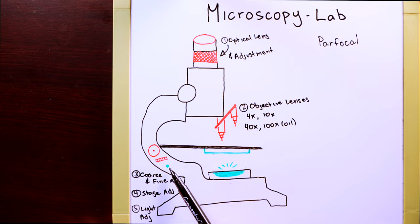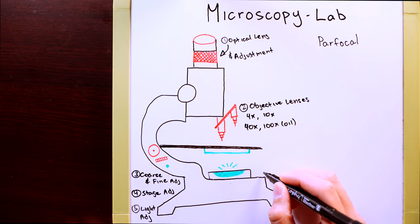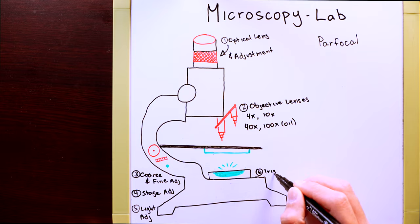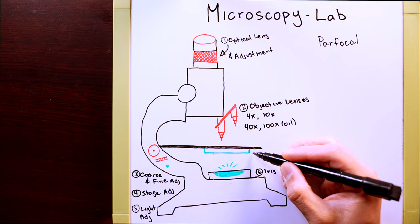There are some microscopes where you have a light switch as well as a knob. The switch simply turns on the light. The knob controls the intensity. The light will then go through the iris at the bottom of the microscope, which is very similar to the iris in your eye, in which it controls the amount of light going through it up into the condenser here.